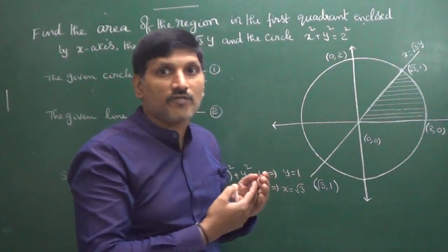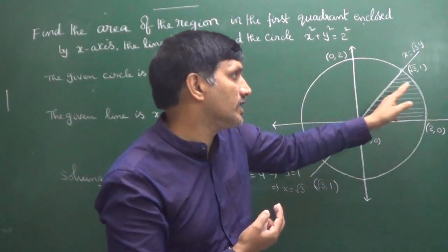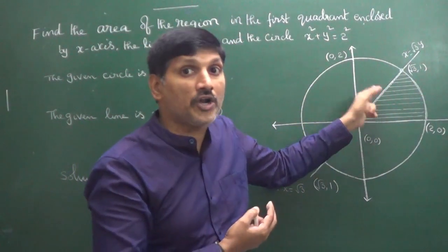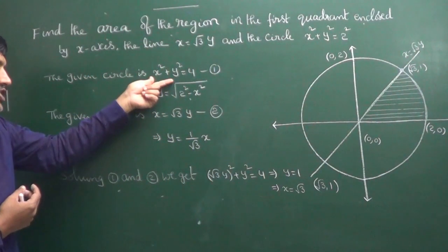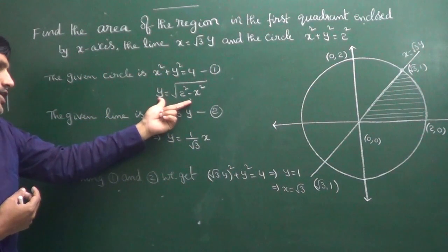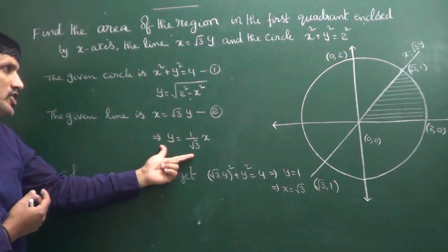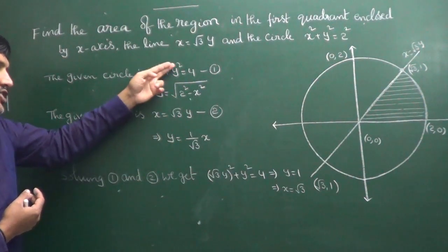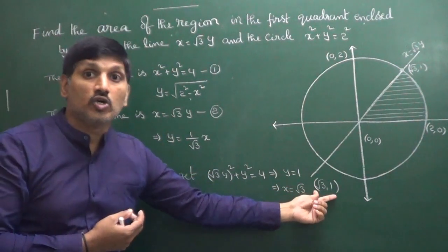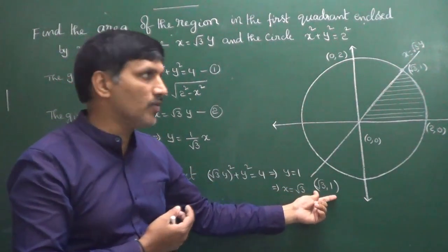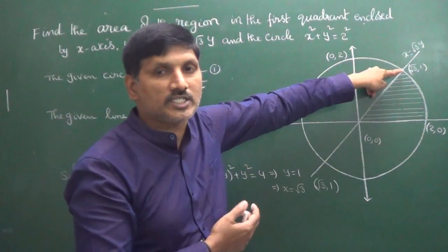To find that shaded area, first we need to find where the circle and the line intersect. Using the given circle equation and the given line equation and solving the two simultaneously, we get the intersection point as (√3, 1).